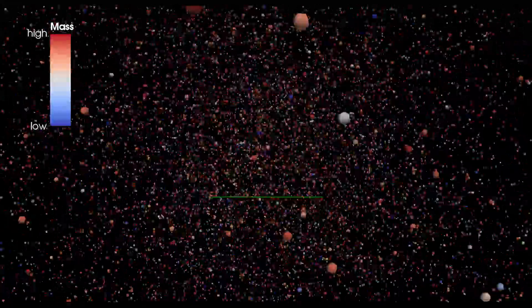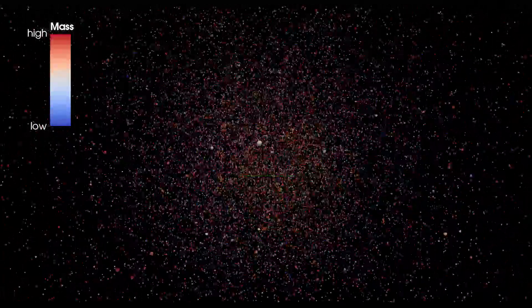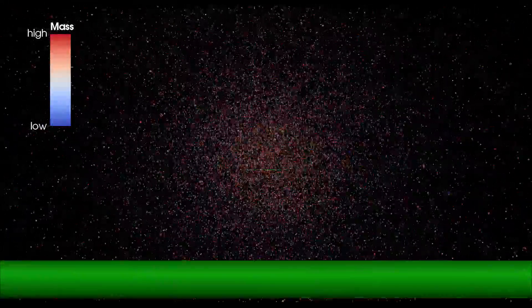The green bar indicates a distance of one parsec within the simulation. Having started near the center of the cluster, individual stars can easily be seen and followed.